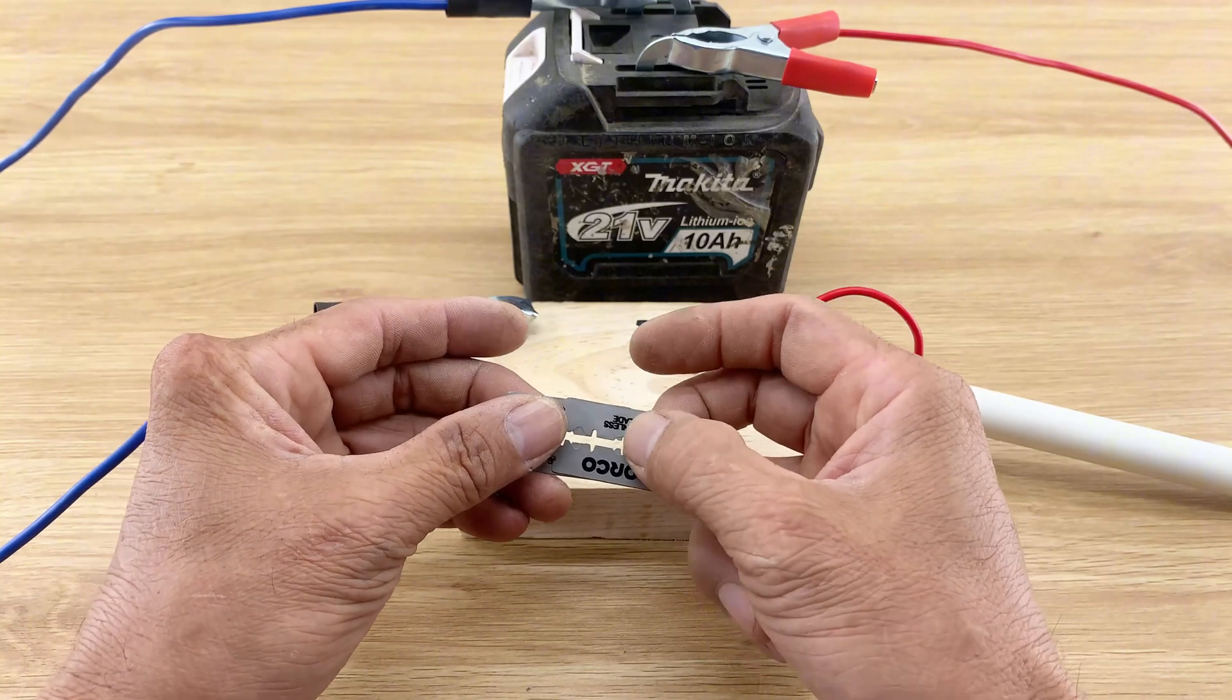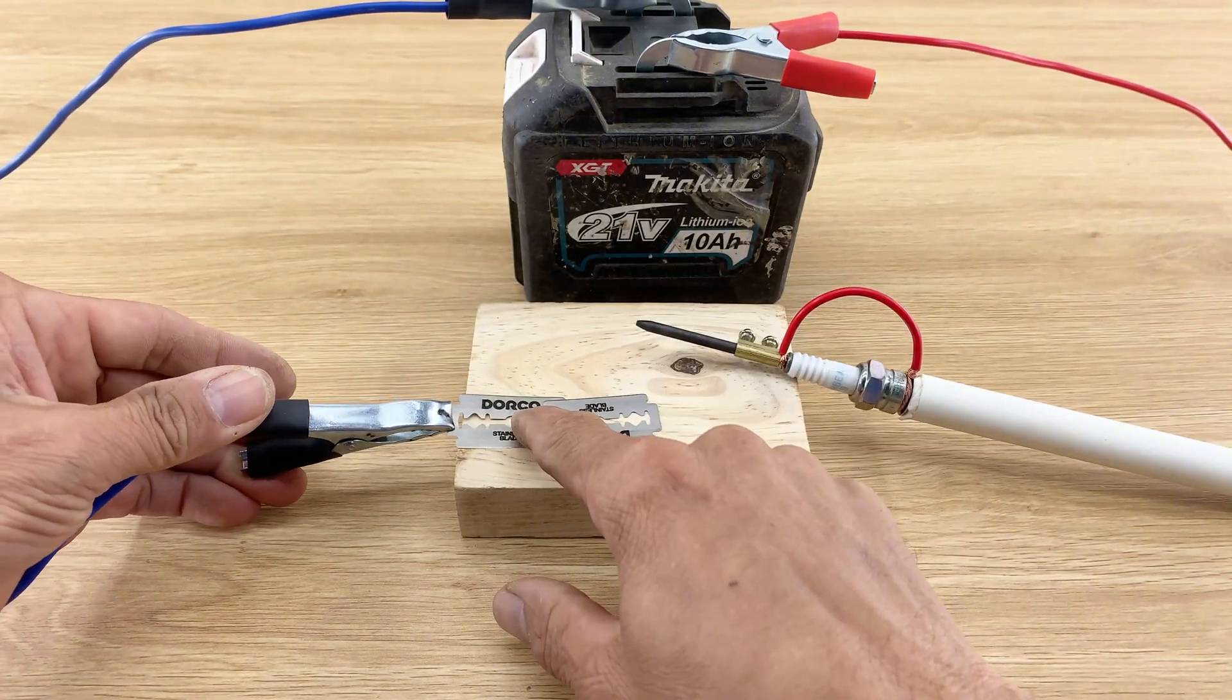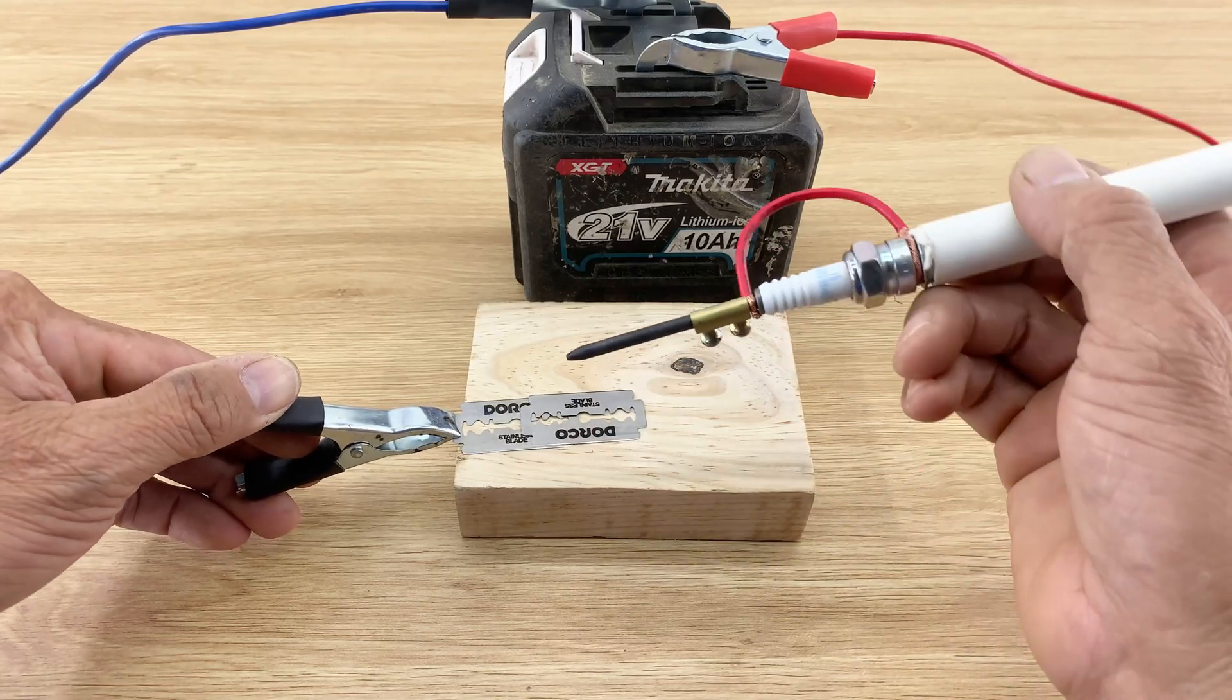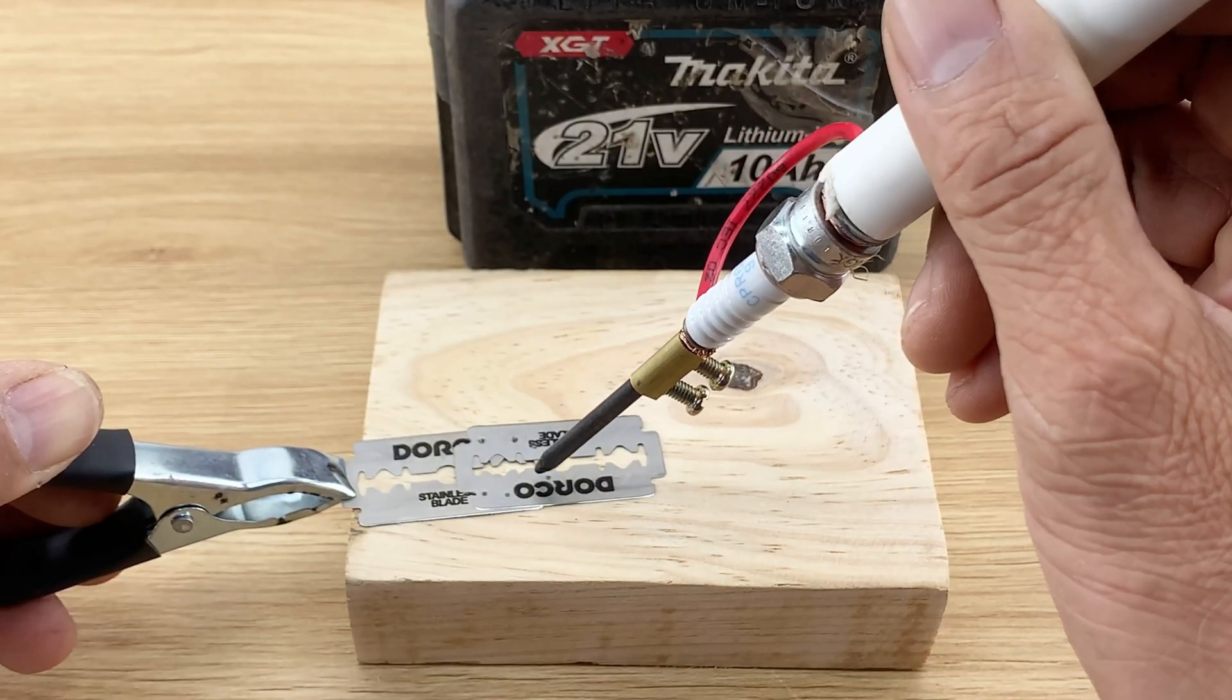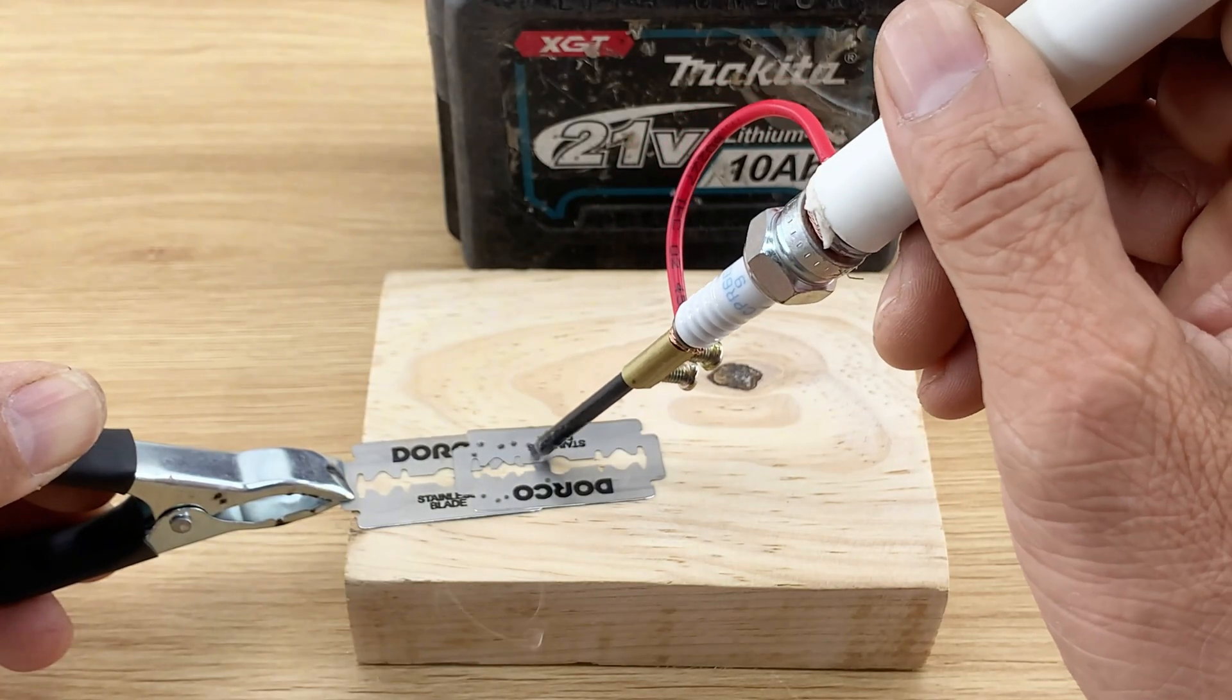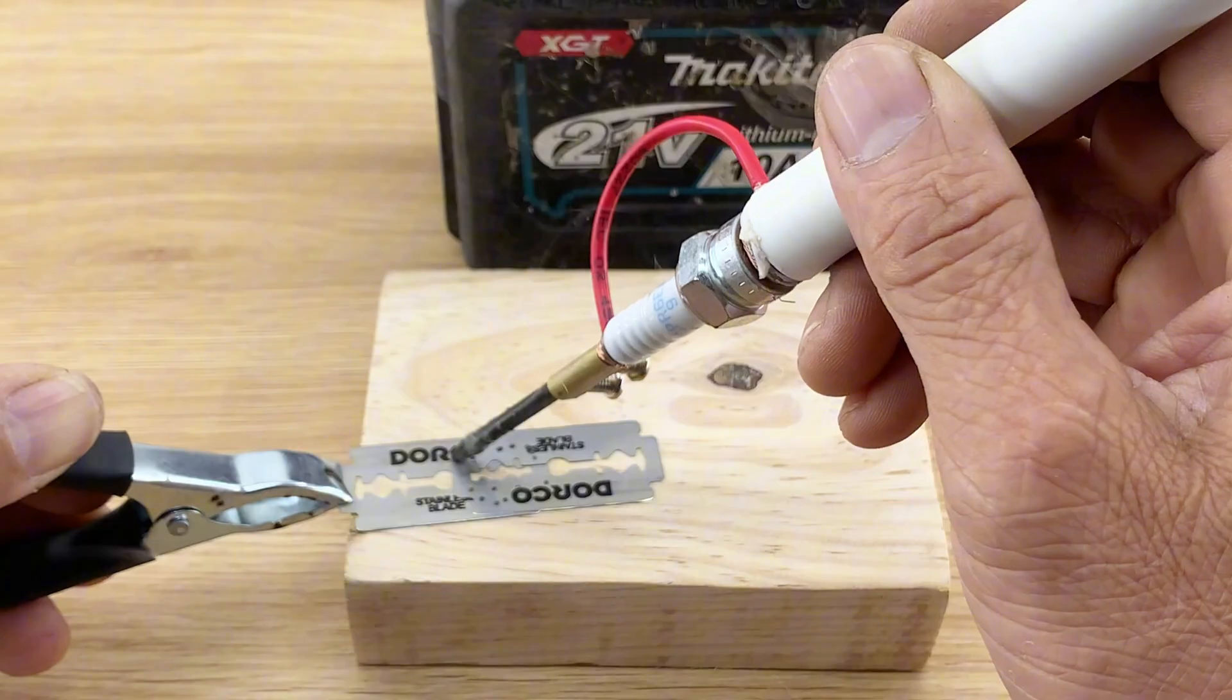I'm going to demonstrate its cutting power on a razor blade. With the battery connected, I'll touch the hot carbon tip to the razor blade. Look at that, it instantly heats up and melts right through the metal. This little device is surprisingly powerful.